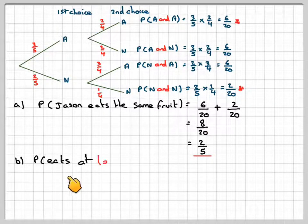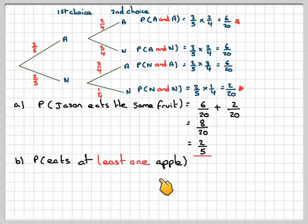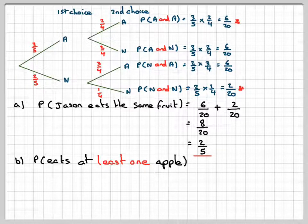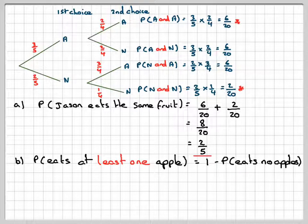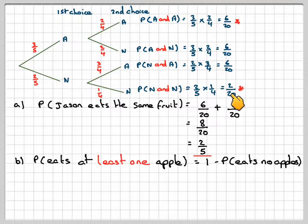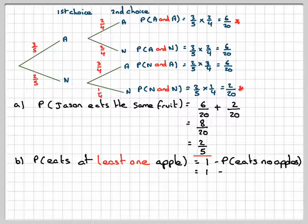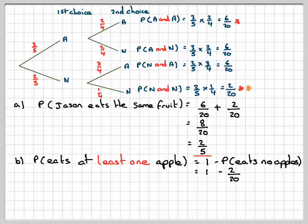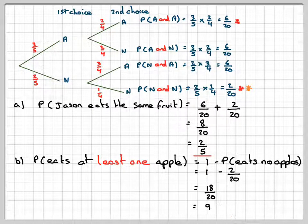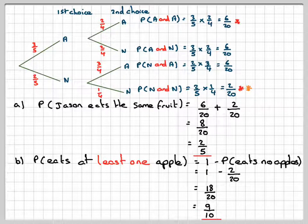And then part b, the probability he eats at least one apple is going to be one minus the probability he eats no apple. So here he eats both nectarines so he doesn't eat an apple. So it's going to be one minus two out of twenty, which gives you eighteen out of twenty, which is nine out of ten.